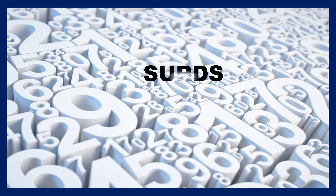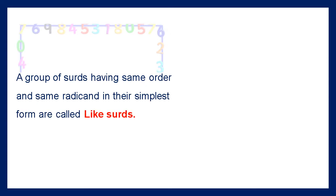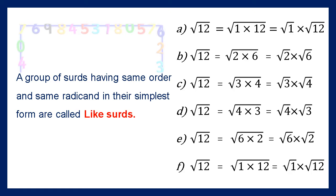Surds. A group of surds having the same order and the same radicand in their simplest form are called like surds. We can observe that the square root of 12 can be written in various forms as shown.